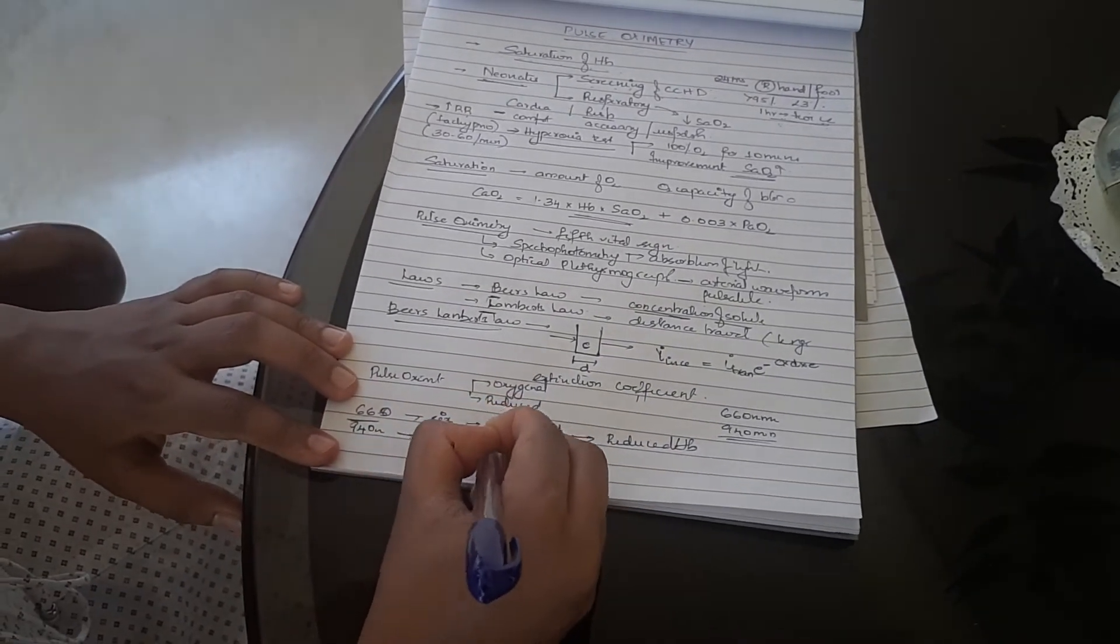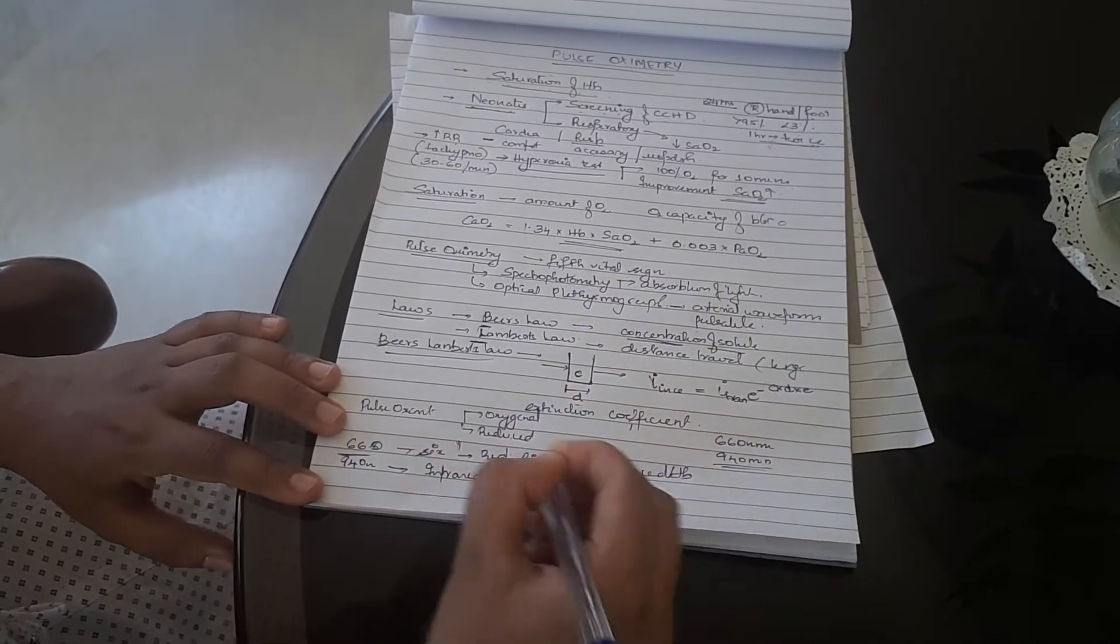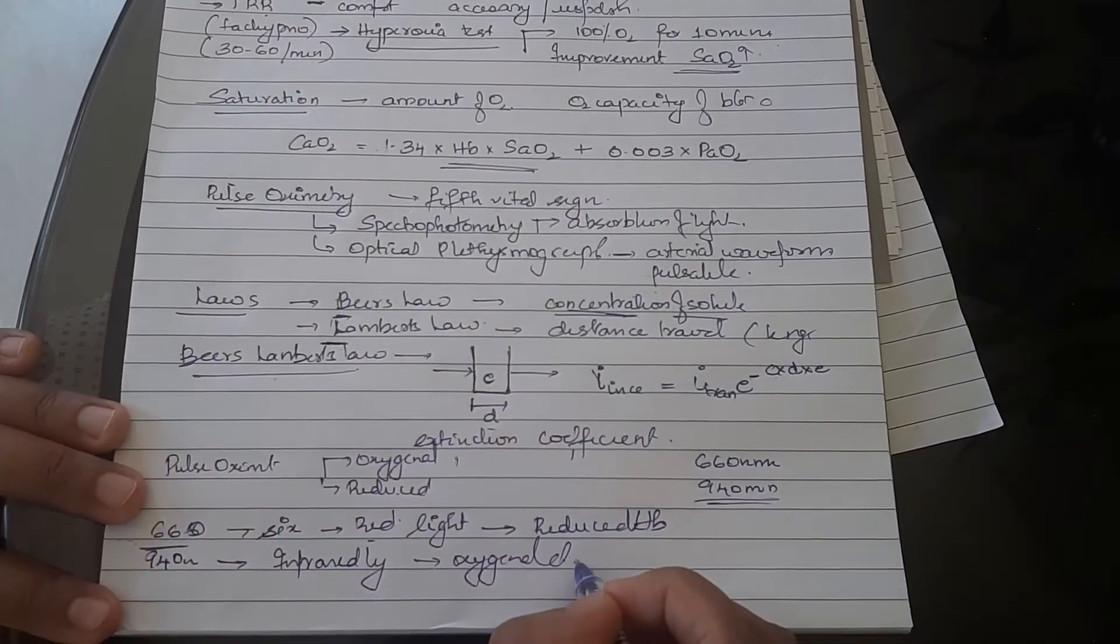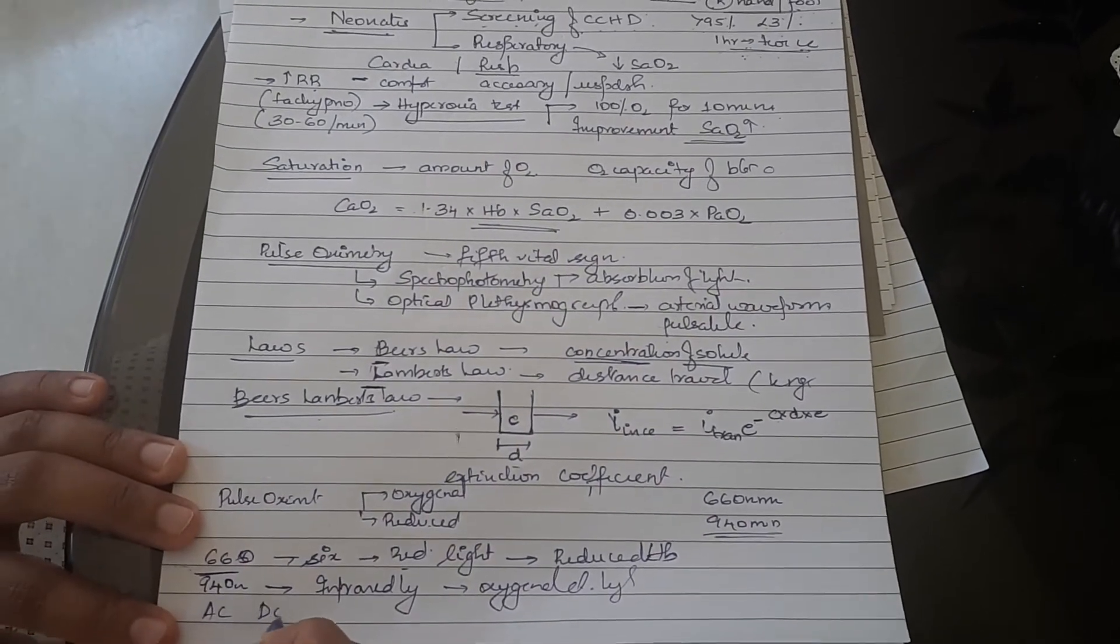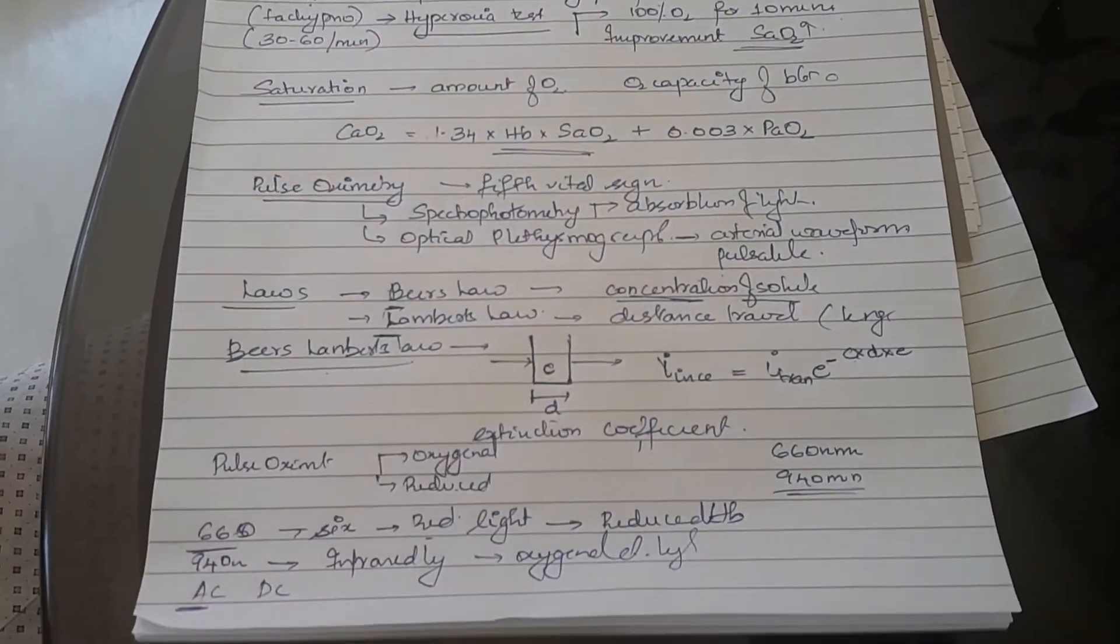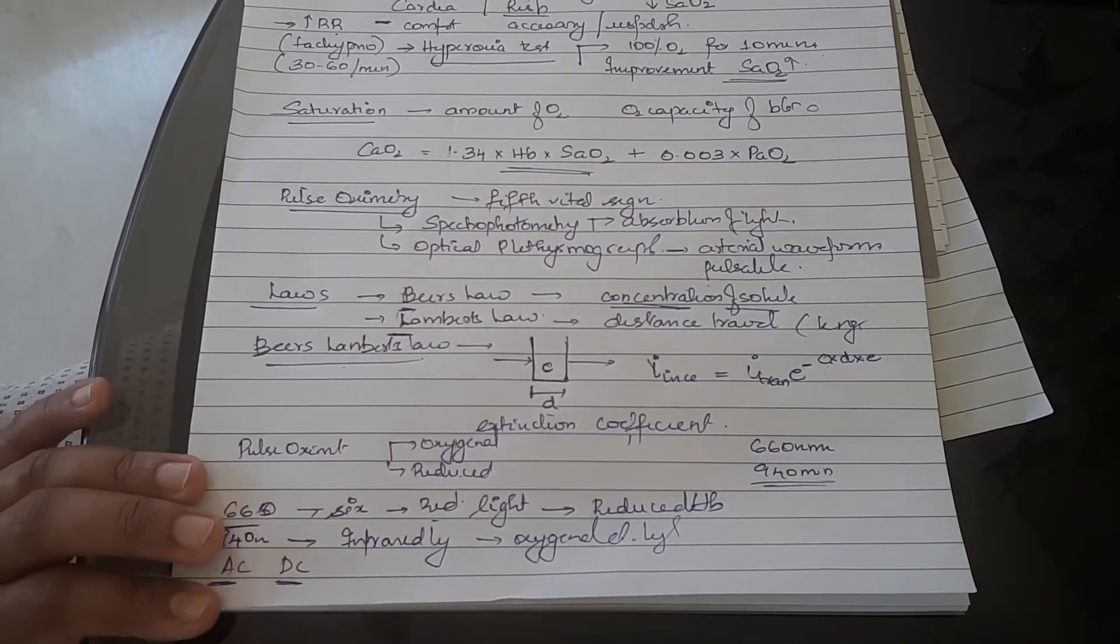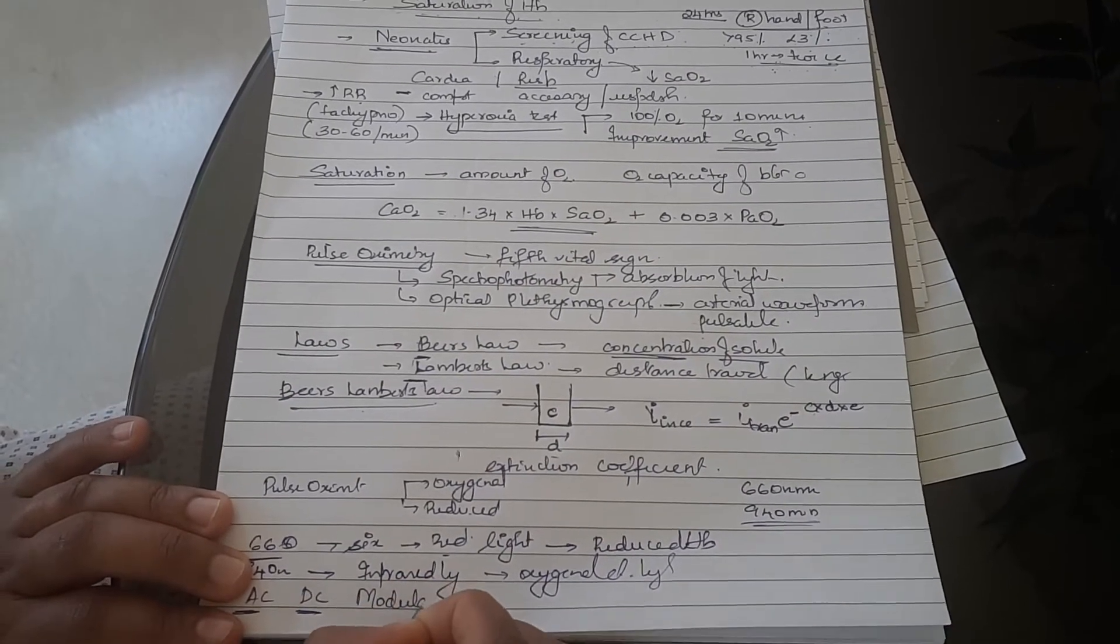Infrared light is for oxygenated hemoglobin. Based on how much of these two wavelengths are absorbed, a value will be obtained using alternating current and direct current. AC will be the pulsatile arterial waveform and DC will be the non-pulsatile part of the tissues. A ratio called the modulation ratio will be obtained.